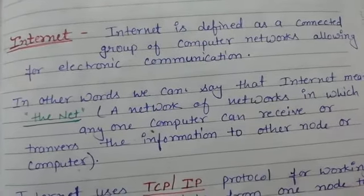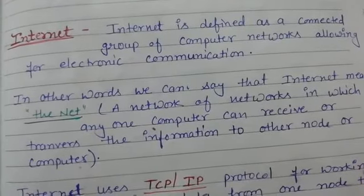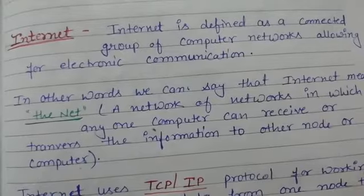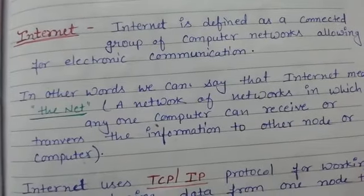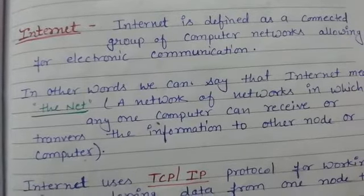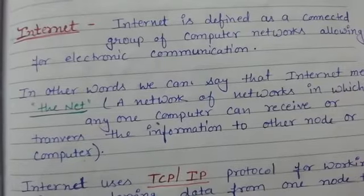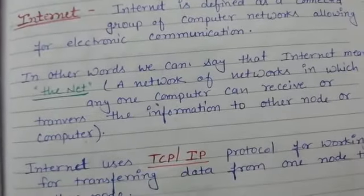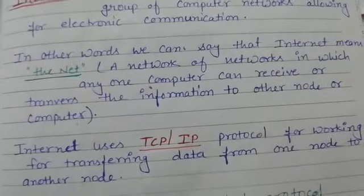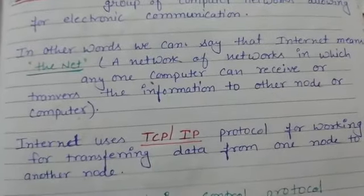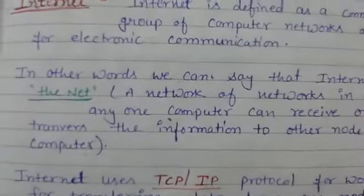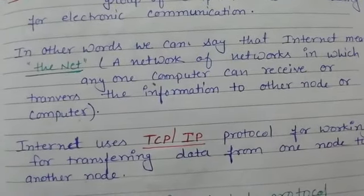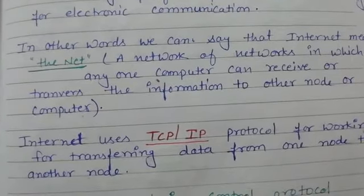A group of computer networks that allows electronic communication between multiple users or multiple systems within a defined range, within a defined area, within defined systems which are granted to use internet services. In other words, internet means 'the net' — a loop in which many computers, devices, and peripheral devices are interconnected between multiple nodes. Multiple nodes can exchange data and information.